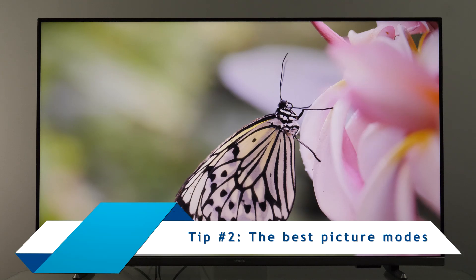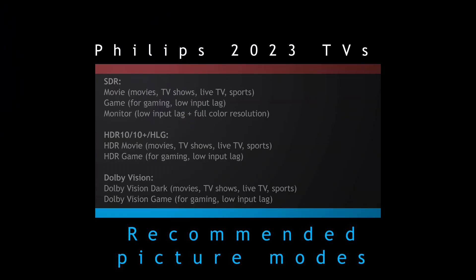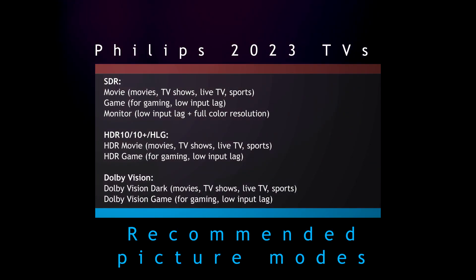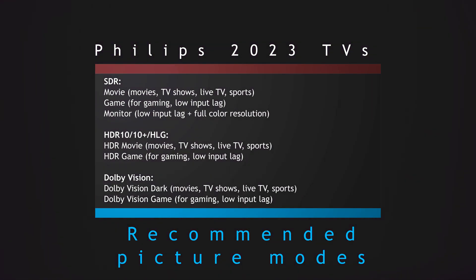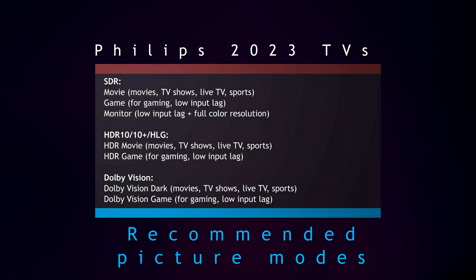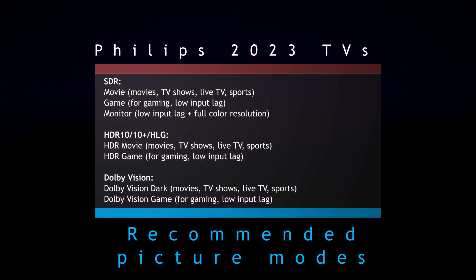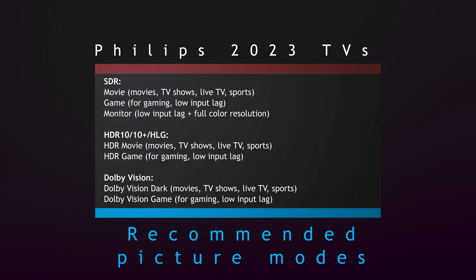Tip number two is to use the most accurate picture modes. For this TV and for Philips TVs this year, my recommendation is to use Movie for SDR content, HDR Movie for HDR10, HDR10+, and HLG content, and Dolby Vision Dark for Dolby Vision. If you want to play games, use Game for SDR, HDR Game for HDR10 and similar content, and Dolby Vision Game for Dolby Vision.